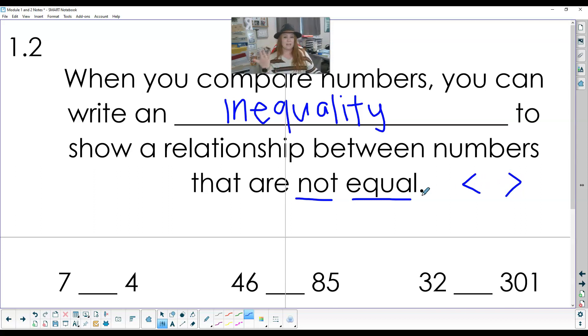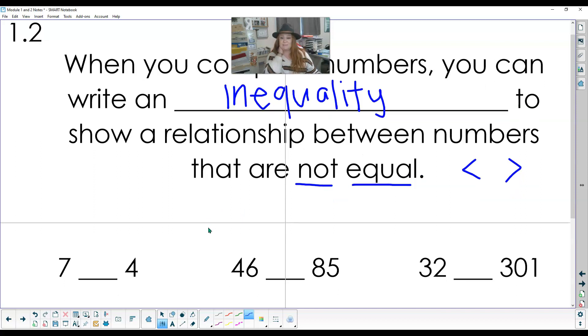And you can flip it either way for whichever one is bigger or smaller. So let's do a couple examples of some numbers here. So if I have seven and four, I know that seven is more. So I would have the big side open to seven. 46 and 85. 85 is more. So the big side would open to 85. 32 and 301. Well, 301 is much bigger. So the big side opens to 301.